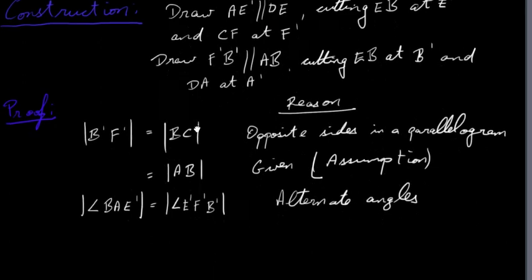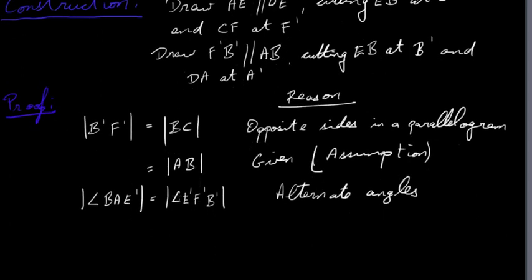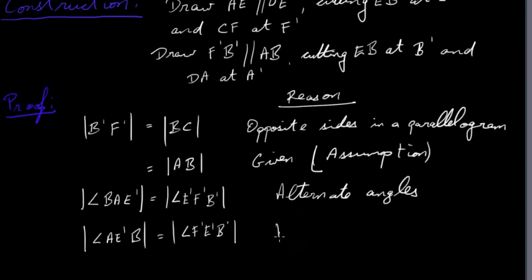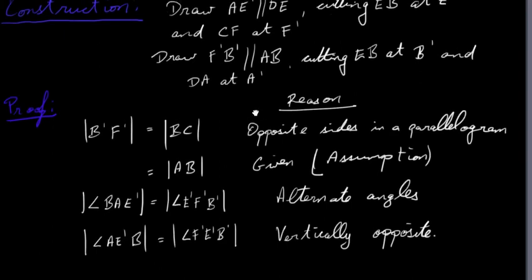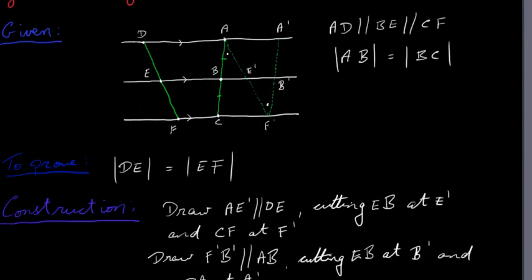Also: angle AE'B is equal to angle F'E'B' — because these are vertically opposite angles. The two angles we're talking about at E' are this angle here and this angle here; those two angles are vertically opposite, so they are equal.